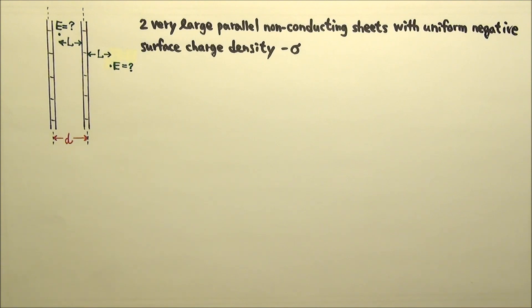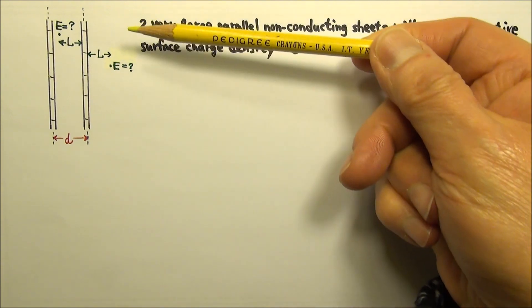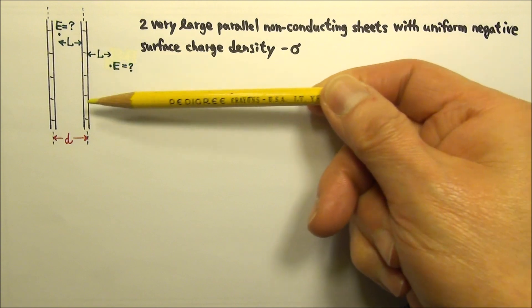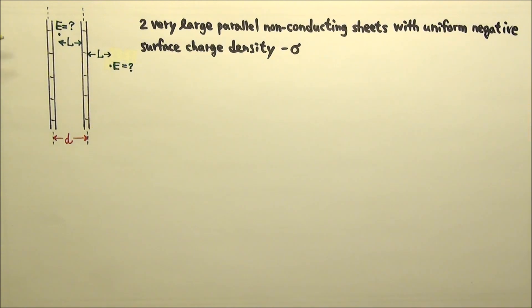These very large sheets have planar symmetry, so all their electric field lines are parallel to each other, and are all perpendicular to the sheets.